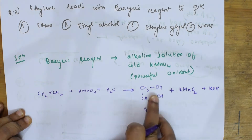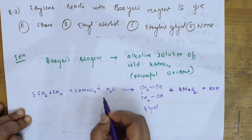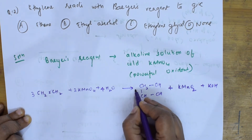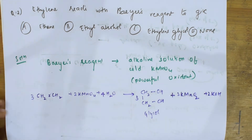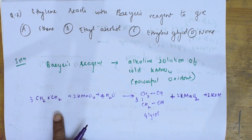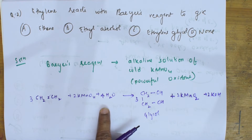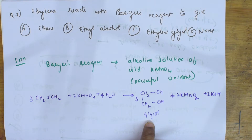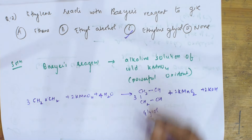So if I have to balance this reaction: 3 ethylene molecules, coefficients become 2 and 3 accordingly, water becomes 4. This is the balanced reaction. So what product do we get? When ethylene reacts with Bayer's reagent — that is cold alkaline solution of KMnO4 — we get glycol. This is ethylene glycol. So the correct option is ethylene glycol.